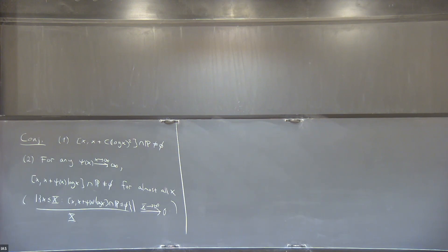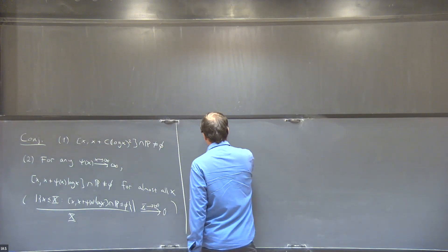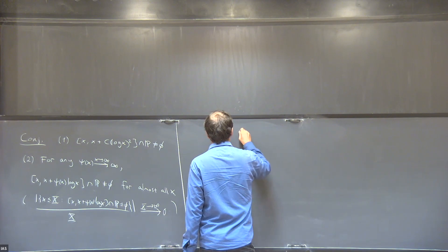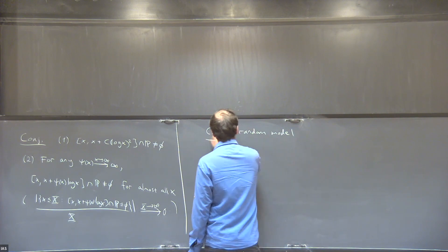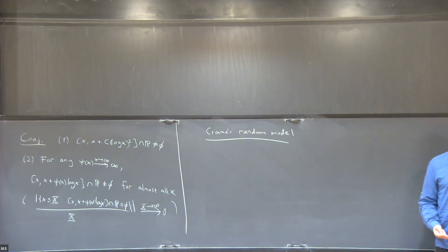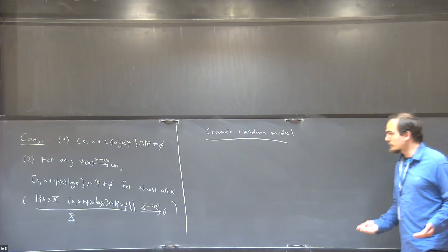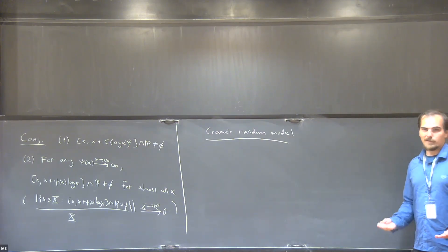This conjecture follows from a probabilistic heuristic. So let me briefly explain what the heuristic is. That's what's called the Cramér random model. And it says that the primes should behave randomly. So the primes should behave like a random set of density one over log X up to X.